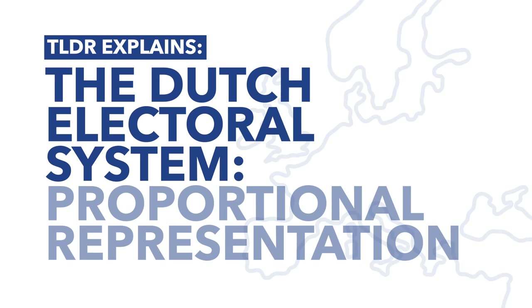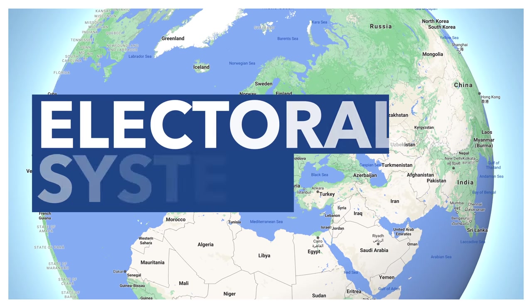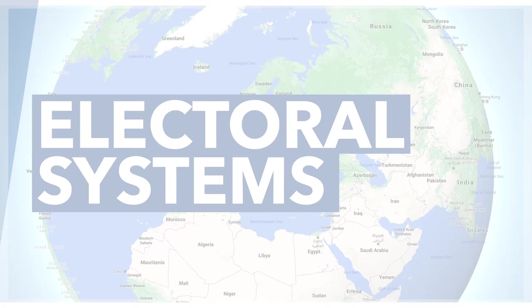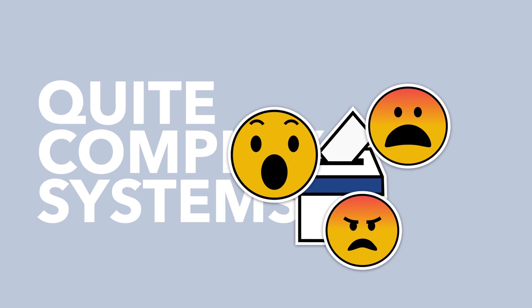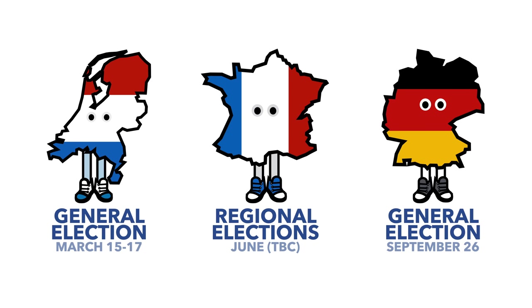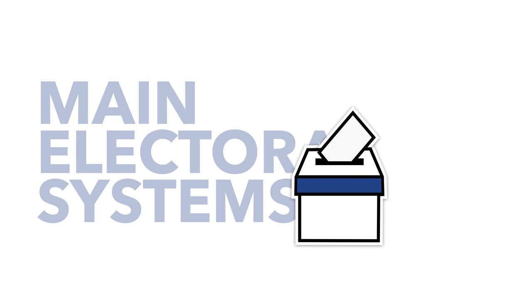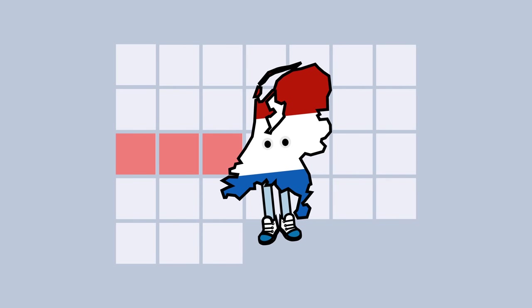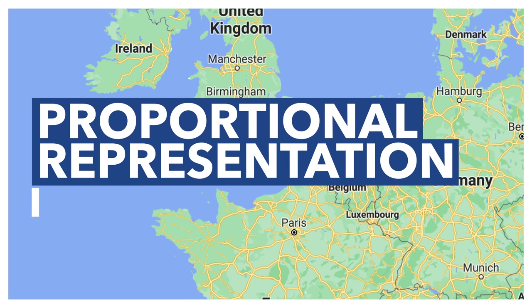Hello and welcome to another TLDR EU video. Throughout the EU and across the world, democratic nations use many different kinds of election systems. These can be quite complex and sometimes lead to results that people consider unfair. So, with elections coming in several EU countries, we thought it was a good idea to start a series comparing some of the main electoral systems, discussing their functioning as well as the pros and cons. With Dutch national elections closing in, let's start with the Netherlands and their system of proportional representation with party lists.